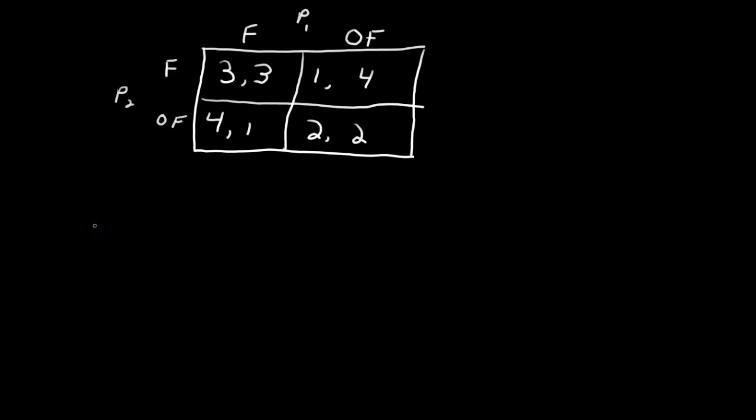Now, if you have been paying attention, you will notice that this game is exactly the same as the Prisoner's Dilemma game in which 2-2 or overfish-overfish is the unique pure strategy Nash Equilibrium.